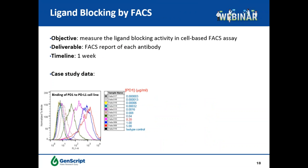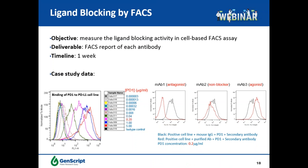For membrane targets, ligand blocking activity can also be evaluated by FACS. In this example, antibodies against PD-L1 were generated and the ligand blocking activity was assessed by FACS. A parallel experiment was done to find the appropriate ligand concentration, which is 0.2 micrograms per ml of PD-L1. The ligand blocking experiment was then performed using that concentration. MAb1 showed strong ligand blocking activity and is an antagonist antibody. MAb2 did not show any blocking effect, while MAb3 showed a ligand-stimulating effect, making it an agonist antibody.